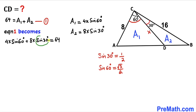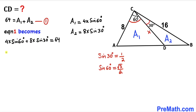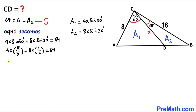We know sine of 30 degrees equals 1/2 and sine of 60 degrees equals square root of 3 divided by 2. Substituting these values, our equation becomes: 4x times (√3/2) plus 8x times (1/2) equals 64. Simplifying, this gives us 2x√3 plus 4x equals 64.